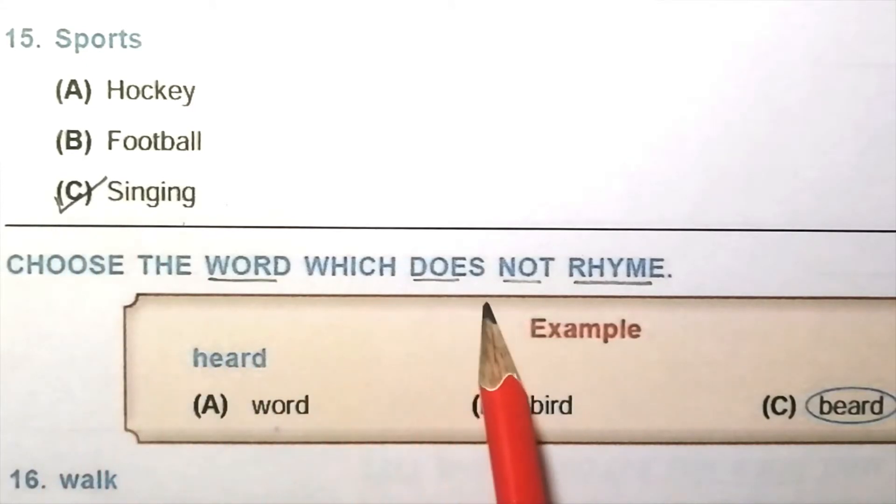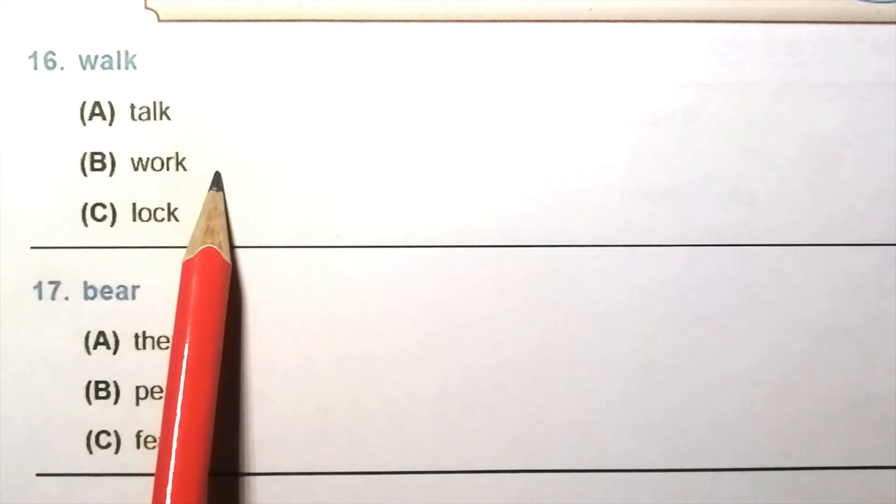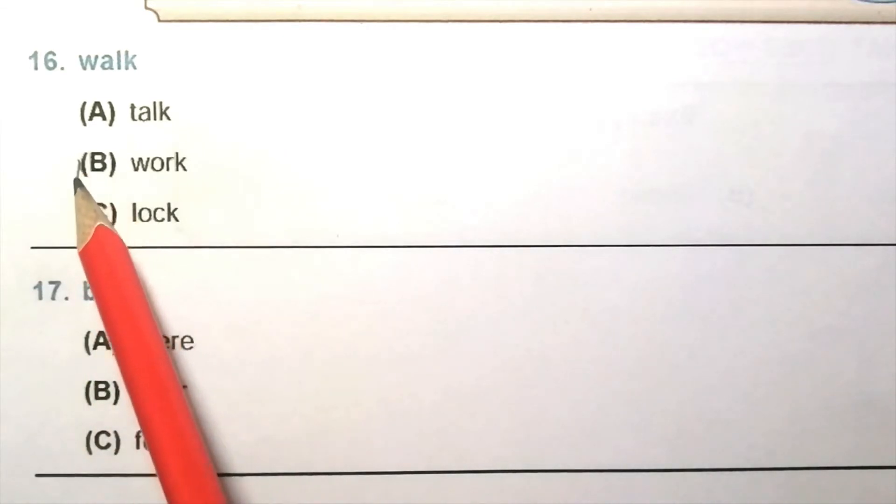Choose the word which does not rhyme. Example: Here word, bird, beard. The answer is beard. Question 16: Walk. Talk, work, lock. The answer is B, work. Work does not rhyme with walk.